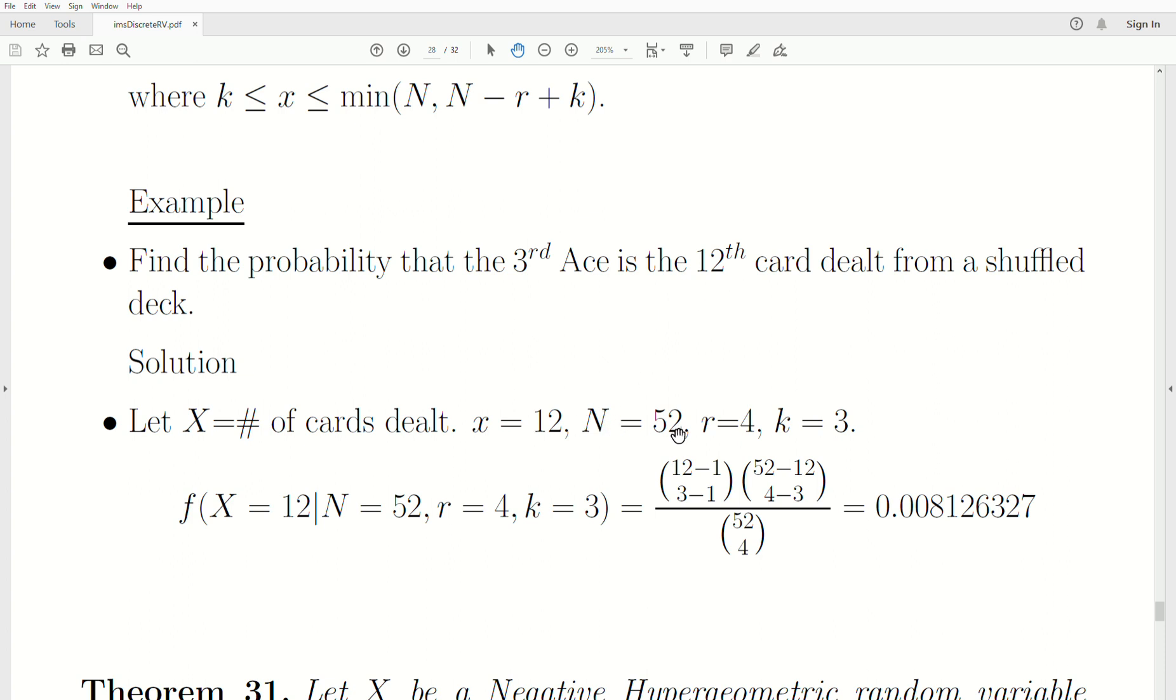The solution is this: if we let the random variable be the number of cards dealt, we want to find the probability that X is 12. N is 52, there's 52 cards in a deck. R is four, there's four aces, and we're interested in observing the third ace. You just plug them into the formula, and the probability is 0.8% that you observe the third ace on the 12th dealt card.